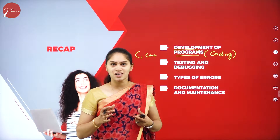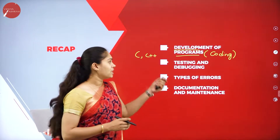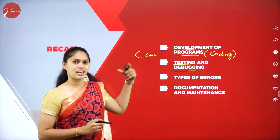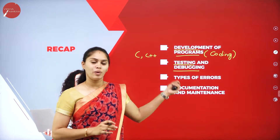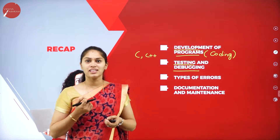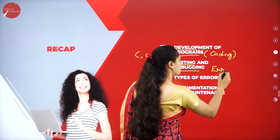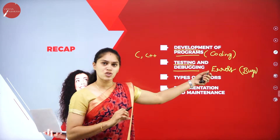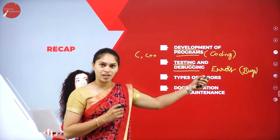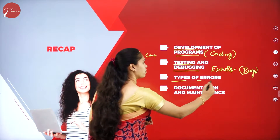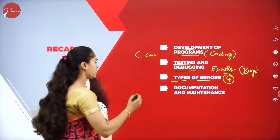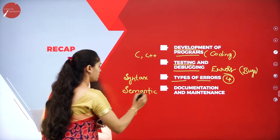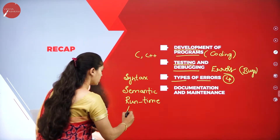Once coding is done, we check whether the set of instructions satisfies the user's requirements — that is testing. Debugging identifies and rectifies errors, also known as bugs. There are four types of errors: syntax error, semantic error, runtime error, and logical error.